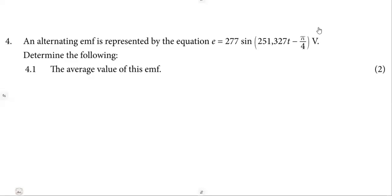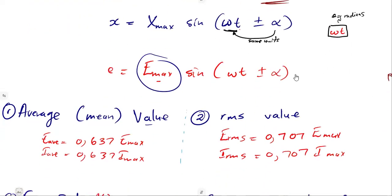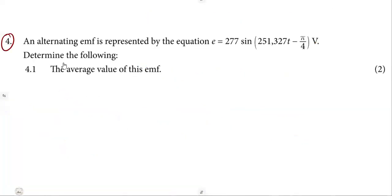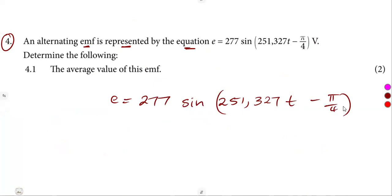As a continuation, we are going to have a question from our activity — Activity 1.1 of the TVET first revised curriculum. We listed the formulas from the AC waveform, the mathematical expression you need to understand in order to answer such type of questions. We are given that an alternating EMF is represented by the equation: E is equal to 277 sine of 251,327T minus pi over 4.